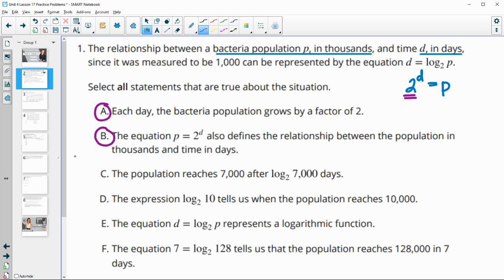The population reaches 7,000 after log base 2 of 7,000 days. So this one, remember that our population is measured in thousands. So we're not going to plug 7,000 in, it would be plugging in 7. So the population reaches 7,000 after log base 2 of 7 days, not 7,000.